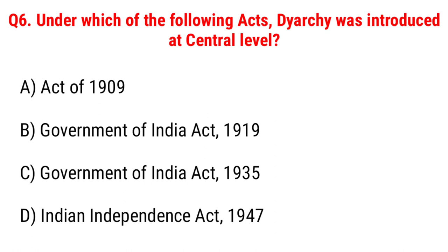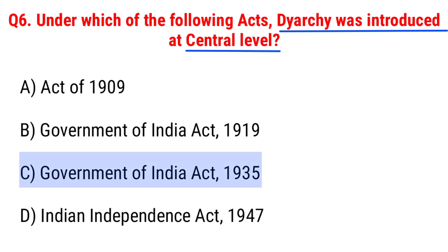Next question: under which of the following acts was diarchy introduced at the central level? Option A, Act 1909; B, Government of India Act 1919; C, Government of India Act 1935; D, Indian Independence Act 1947. The right answer is Option C, Government of India Act 1935.